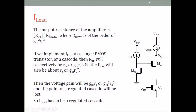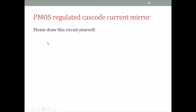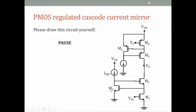Therefore, this I-load also has to be implemented as a regulated cascode so that its resistance is also of the order of GM² RO³. Let us draw the circuit. This bottom part is the same as the previous slide: M1, M2, M3. On top, since this is PMOS, we first draw a telescopic cascode — M5, M4.